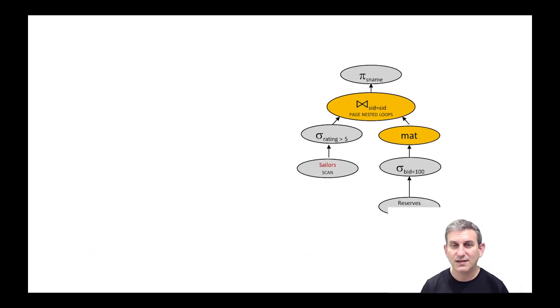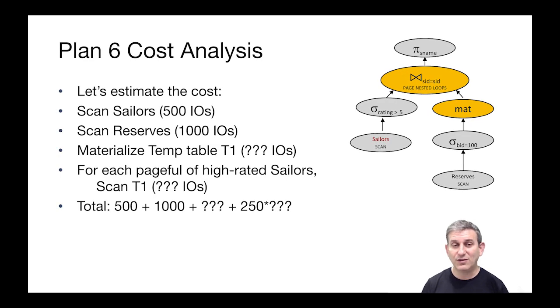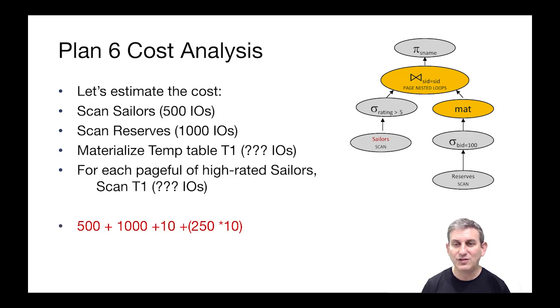What's the cost? Let's walk it through. We're going to scan Sailors, that's 500. We're going to scan Reserves once, that's a thousand. And materialize this temp table T1, which has only boat ID equals 100. Then for each pageful of Sailors, we're going to scan this T1. How many pages are there where boat ID equals 100? We said before that that is 10 pages—it's one-hundredth of the pages in Reserves.